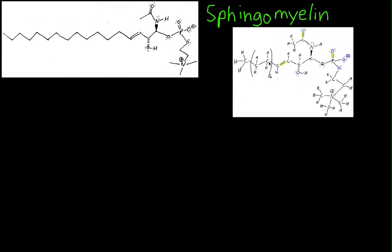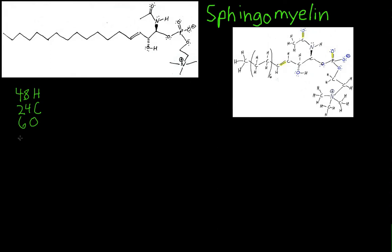Each of these lines that doesn't have anything attached to it denotes a carbon with hydrogens attached to it. So some basics on molecules: they are made of atoms bonded together. In the case of sphingomyelin, we have 48 hydrogen atoms, 24 carbon atoms, 6 oxygen atoms, 2 nitrogen atoms, and 1 phosphorus atom.